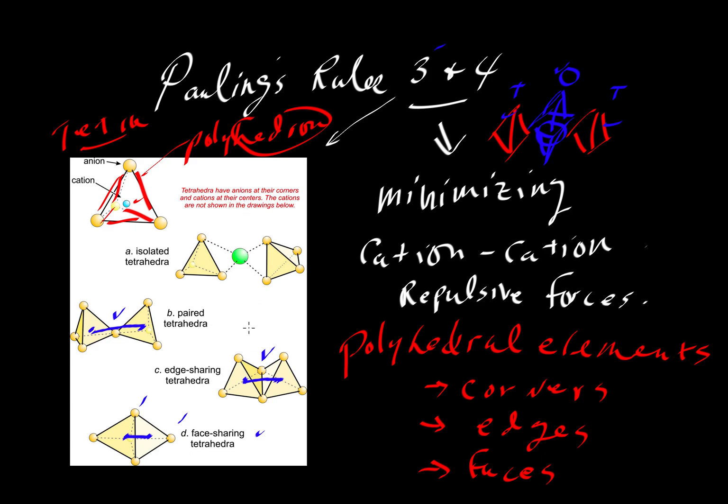So, rule three is really about the geometry of these guys. That if you have cations that are highly charged, and that segues into 0.4, then it's going to be increasingly less likely that you would have corner edge or face sharing. And this would be the least likely of them all because it brings those cations in close contact.